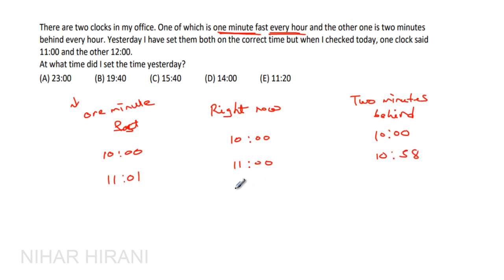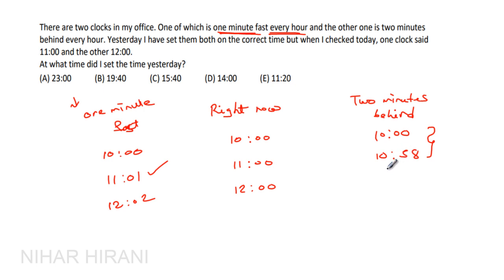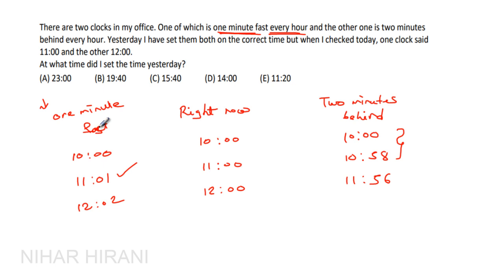Now what will happen after one more hour at 12 o'clock? The real time is 12 o'clock, but the fast clock goes one minute faster every hour — meaning when it is really 60 minutes it goes ahead by 61 minutes — so it will show 12:02. The slow clock goes two more minutes behind every hour, so when it is exactly 12 o'clock it will show 11:56. If you observe, after one hour there is a difference of three minutes between 10:58 and 11:01.